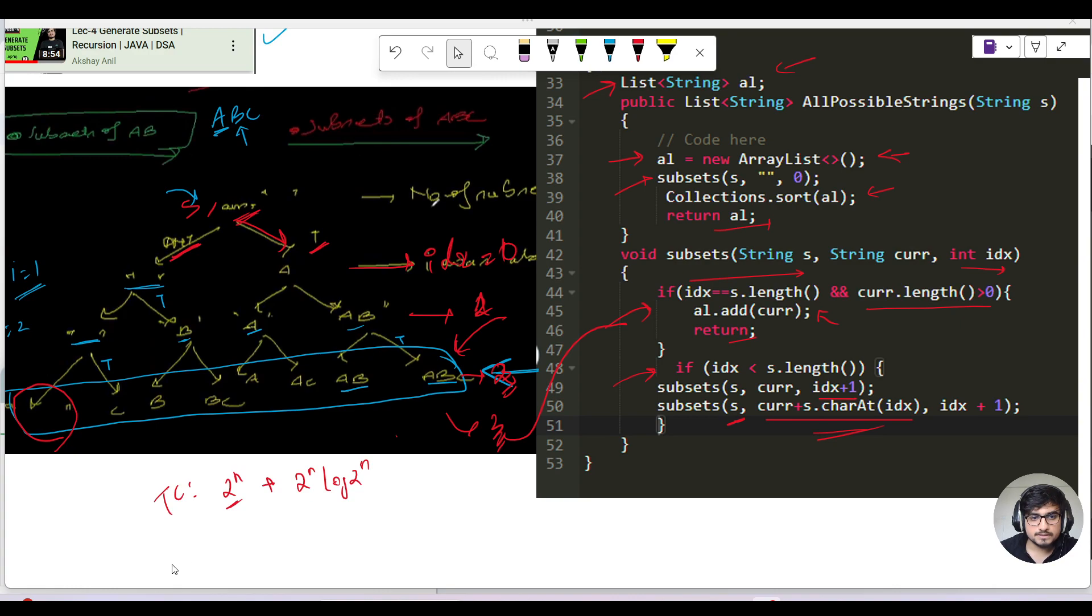For space complexity, definitely O(n) is your recursive stack space because you go through each level from index 0 to string length. 2^n would be your space required to store all the particular subsets in your ArrayList. That would be your time and space complexity.